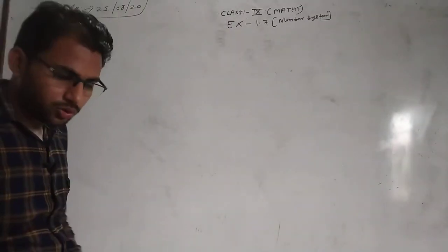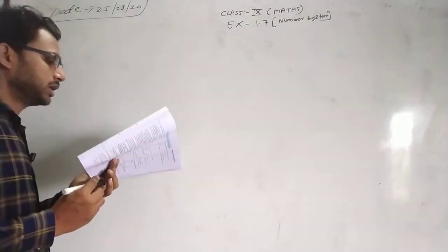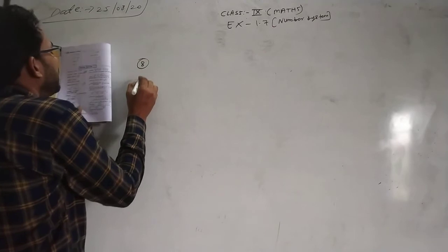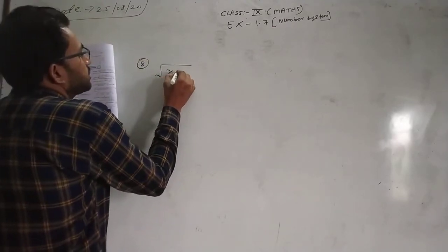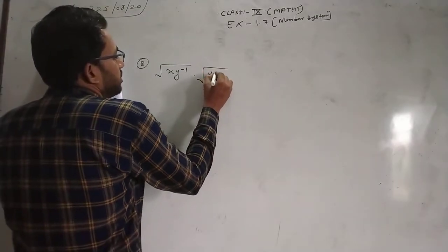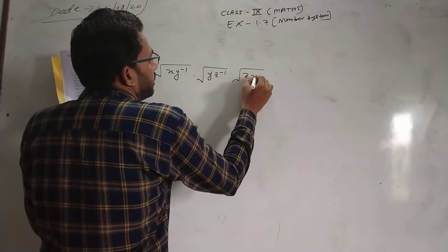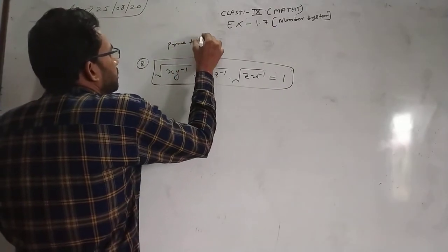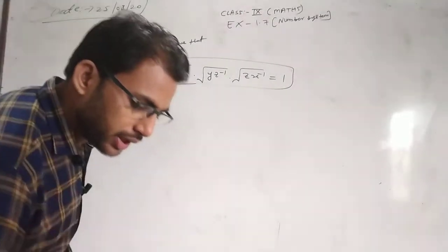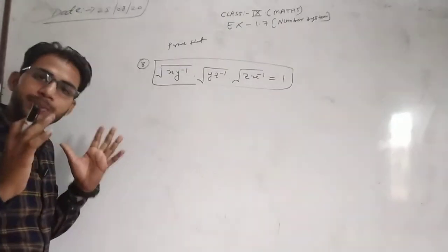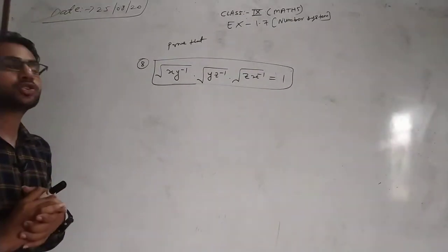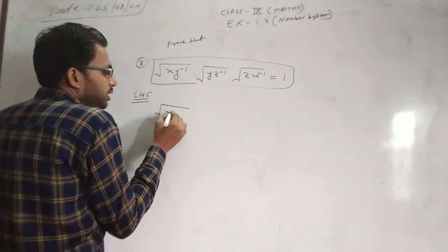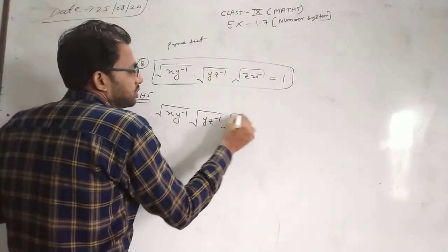Next question — one more simple question. Question number 8 — I will now try the 7th one. X to Y minus 1, multiplied by Y Z minus 1, and Z X minus 1 equals 1. This is a different type of question — we need to prove it. Today's last question. I believe you will also do questions 7 and 6 as homework. This is a different type of question in the chapter.